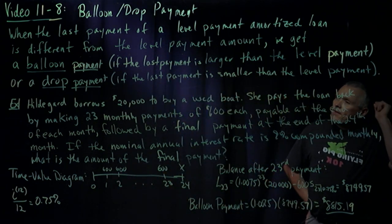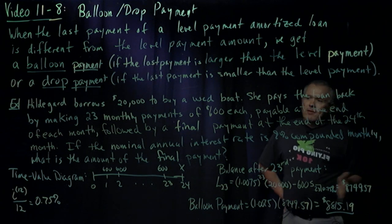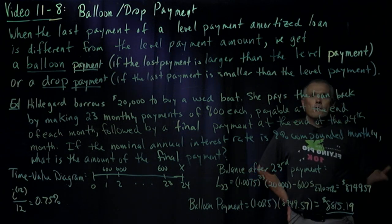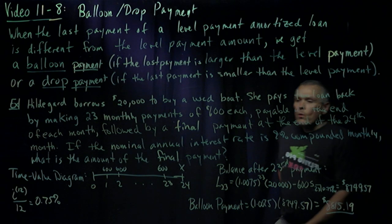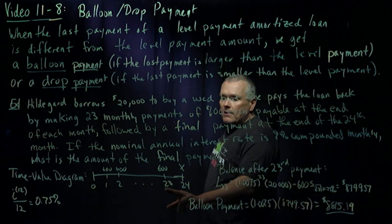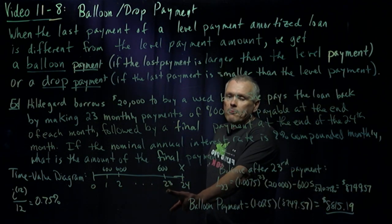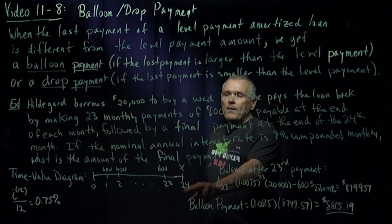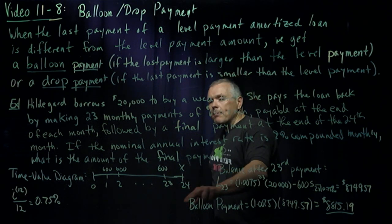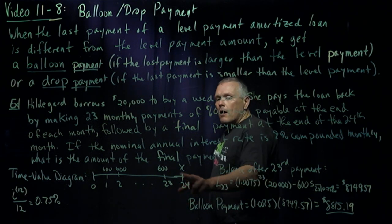To figure out the amount of that last payment, and remember that last payment has to pay the loan off, we need to figure out the balance at the time right before the last payment, add the interest on, and then that will be the amount that we have to pay off.